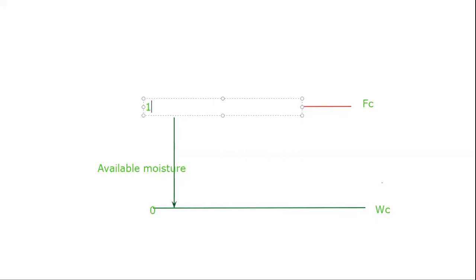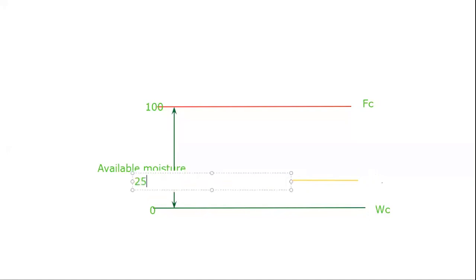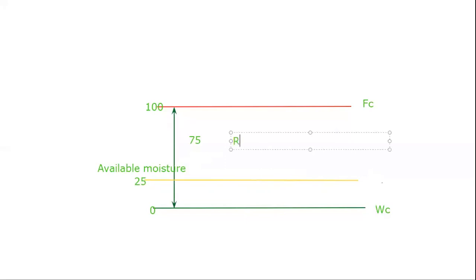On a scale from zero to 100, they told that the available moisture must not fall below 25%. So from zero to 25 is the lower limit. The remaining is nothing but 75%, and this 75% is nothing but the readily available moisture, between 100 and 25.